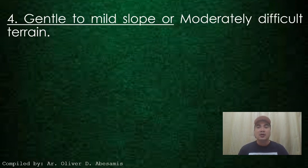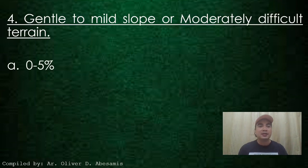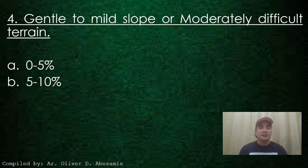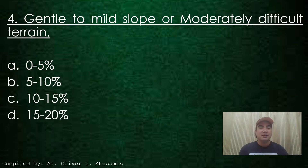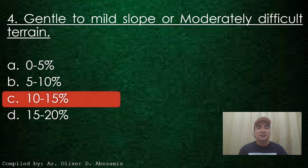Next. Gentle to mild slope or moderately difficult terrain. A. Zero to 5%, B. 5 to 10%, C. 10 to 15%, D. 15 to 20%. Answer: C. 10 to 15%.